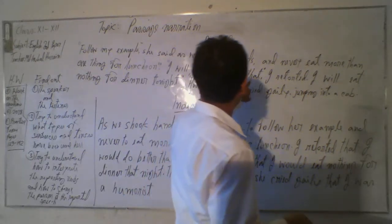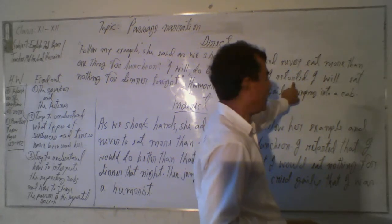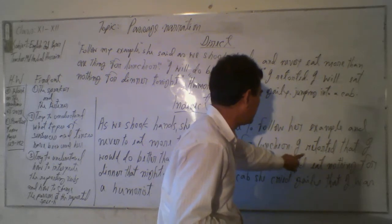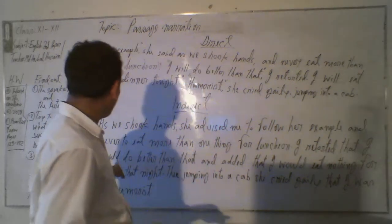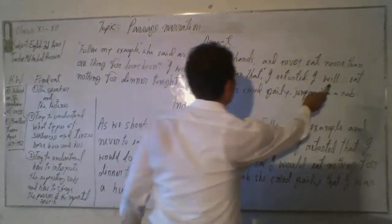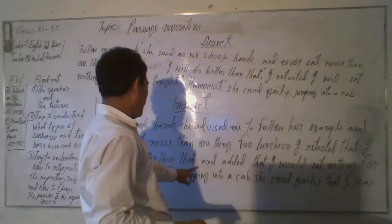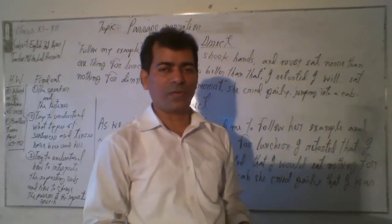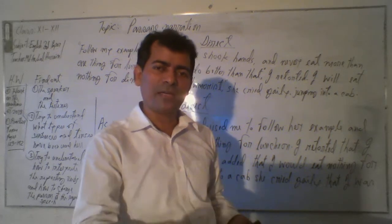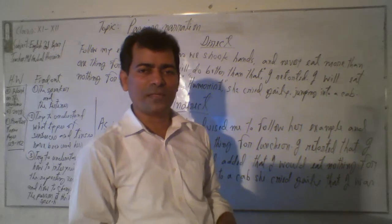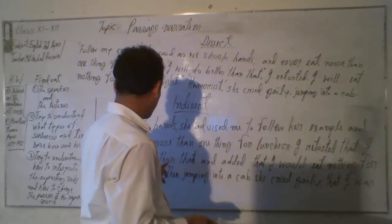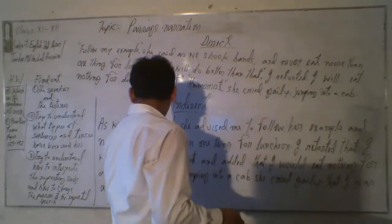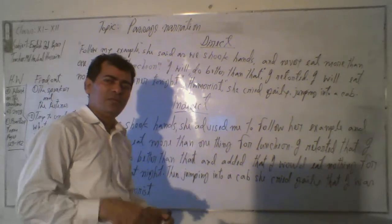'I will do better than that' — this will have changed into future tense and we add 'that.' If a speaker speaks two or three sentences together, we need to use 'added that' after writing the first sentence. So: 'she added that she would eat nothing for dinner that night.' Note that 'tonight' changes into 'that night.' There is a list of words and phrases that change — for example, 'now' becomes 'then,' 'here' becomes 'there.'